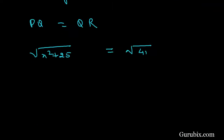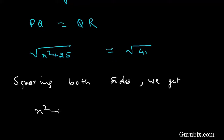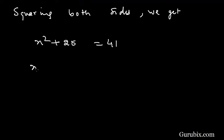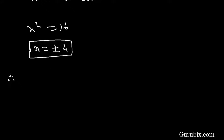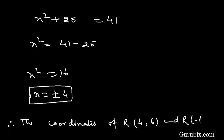Since PQ = QR, we have √[x² + 25] = √41. Squaring both sides gives x² + 25 = 41, so x² = 41 - 25 = 16, therefore x = ±4. The coordinates of R will be (4, 6) or (-4, 6).